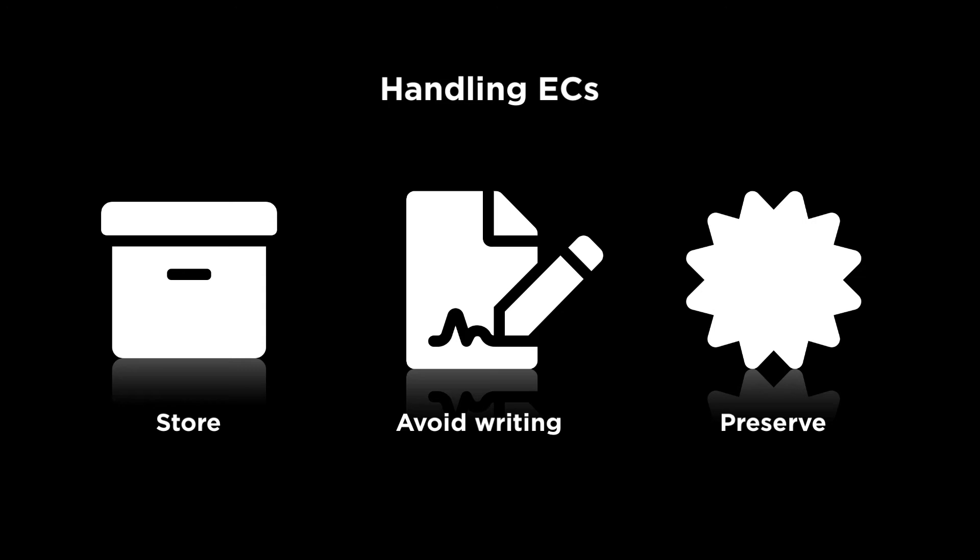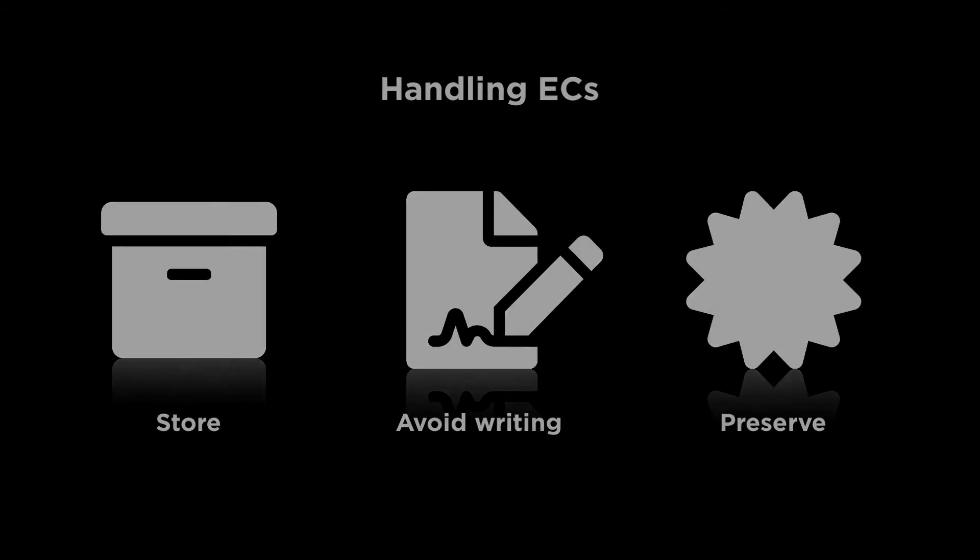However, do not change the form by writing on it. We have an entire video on how to make changes to or correct an EC — please refer to that for correct ways to fix information on the form. A quick piece of advice: use Section G to make changes or clear up anything if you feel you need to. Section G is where you, as the local floodplain administrator, can write the notes you need to and make changes on the form.